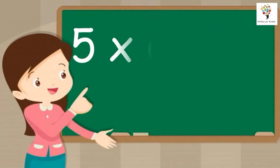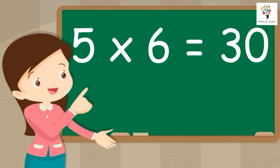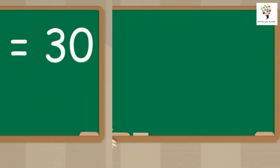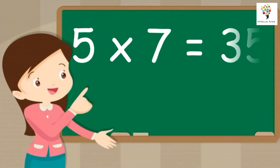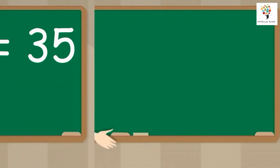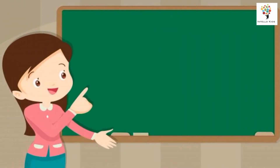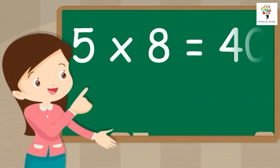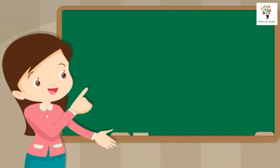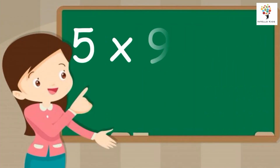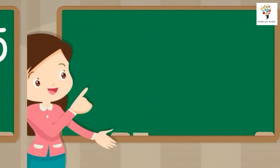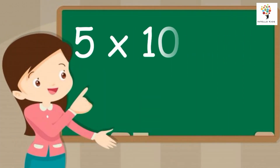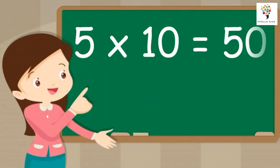Five sixes are thirty. Five sevens are thirty-five. Five eights are forty. Five nines are forty-five. Five tens are fifty.